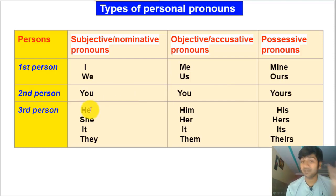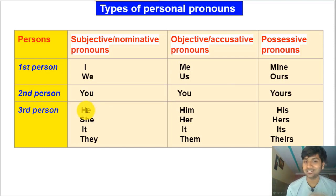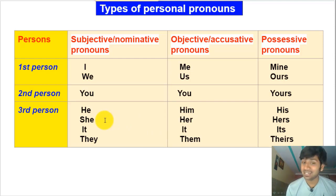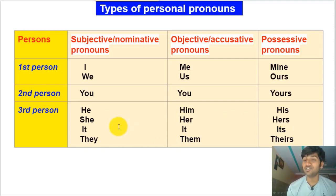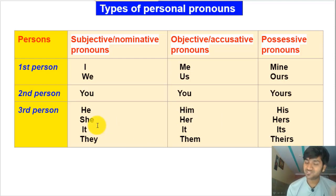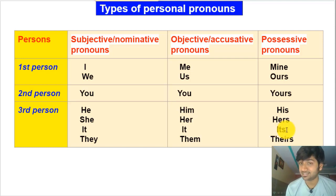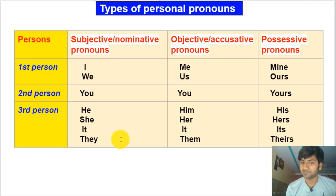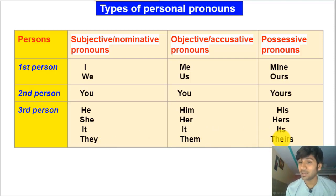In the third person we have four pronouns. 'He' is used to refer to a male person: subjective — he, objective — him, possessive — his. 'She' refers to a female: subjective — she, objective — her, possessive — hers. 'It' is used for a thing, a non-living object, an animal or a bird: subjective — it, objective — it, possessive — its (without apostrophe). 'They' refers to a group of people where you are not part of the group: subjective — they, objective — them, possessive — theirs.